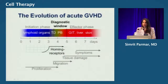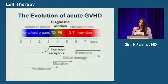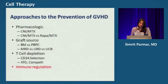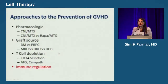In the evolution of acute GVHD, there is an initiation phase during which the antigen-presenting cell engages the donor T cell, leading to proliferation. This upregulates homing receptors to inflammatory regions, causing T cells to migrate and lead to tissue damage. Finally, there is an effector phase with clinical outcomes seen in skin, liver, and GI tract. Approaches for prevention include pharmacologic agents, graft-source T cell depletion, and immune regulation — exploiting the subset of T cells that suppresses inflammatory responses.